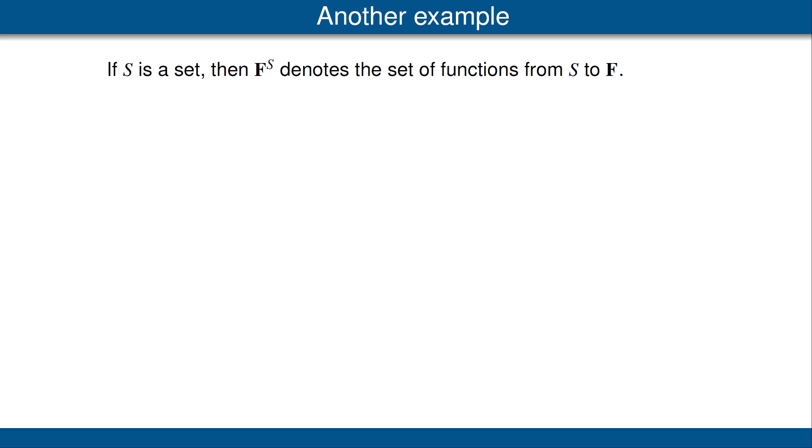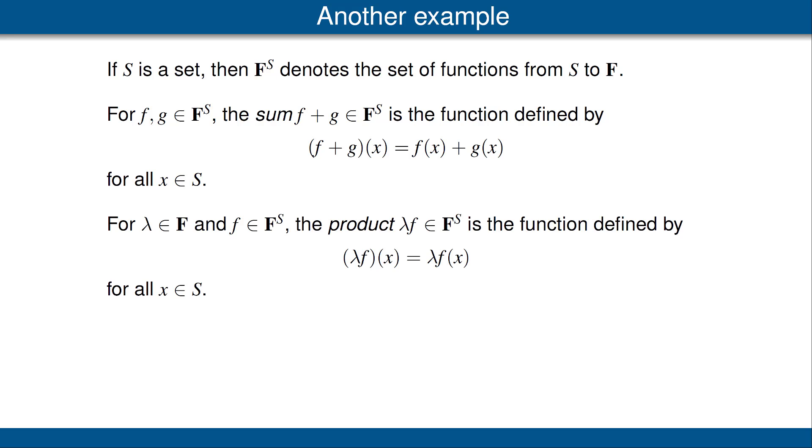Let's look at another example of a vector space. Suppose S is a non-empty set. Let F^S denote the set of functions from S to F. We define the sum of two functions from S to F in the obvious way, namely, the value of the function f + g at x is the value of f(x) plus the value of g(x). Similarly, we define scalar products in the obvious way. If λ is a scalar, meaning a real or complex number, and f is a function from S to F, we define λf to be the function from S to F whose value at any point x in S is λ times f(x). With these definitions of addition and scalar multiplication, you should verify that F^S is a vector space.